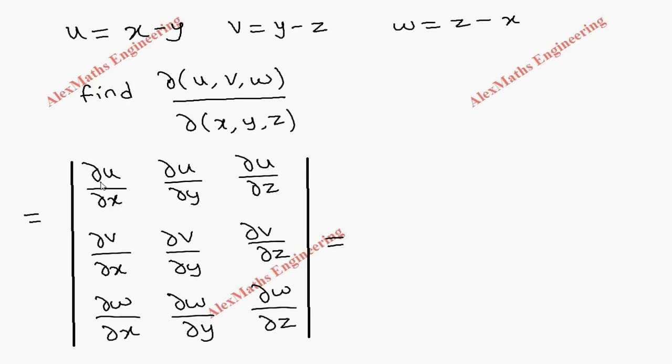Partial differentiation of u with respect to x is 1, then v with respect to x is 0 because both are constant, and here it is -1. Then u with respect to y is -1 and v with respect to y is 1.